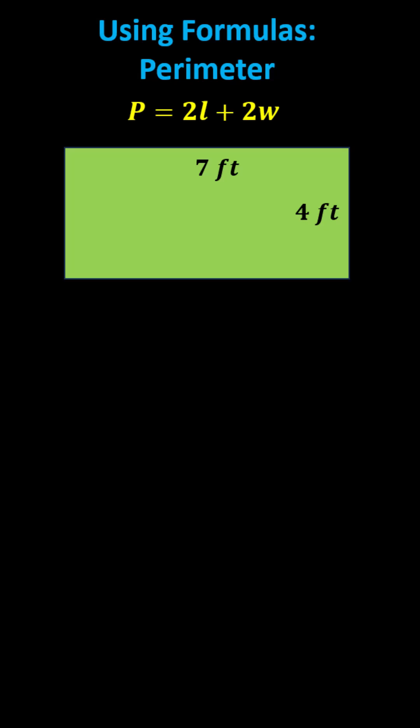The perimeter formula for a rectangle is the perimeter p equals 2 times l plus 2 times w, where l is the length and w is the width.